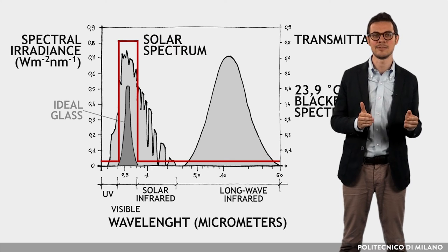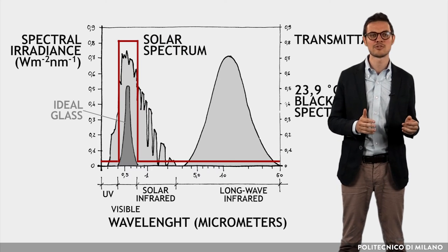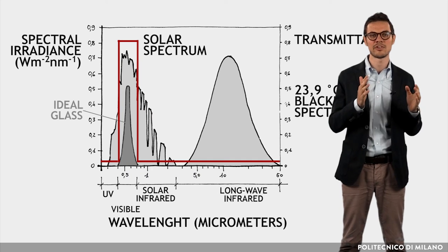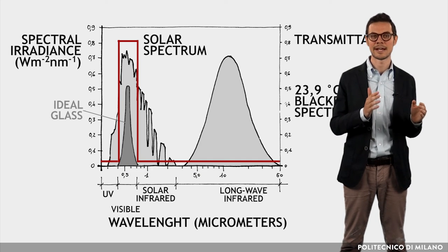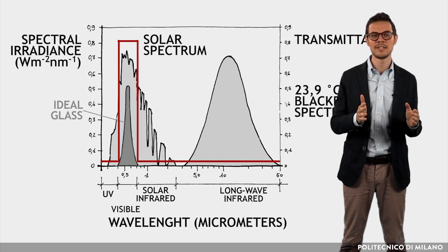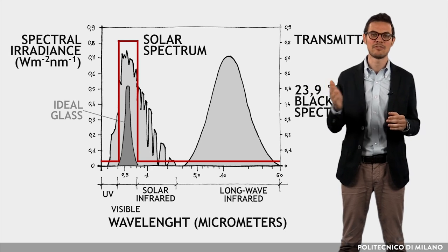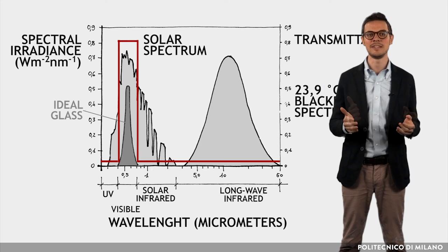In the hot season, by contrast, the ideal glass should be able to block the near infrared component of solar radiation to reduce the heat gain and transmit the far infrared radiation emitted by the interior space.